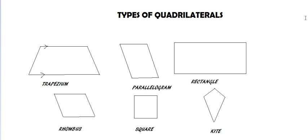By now you have a general idea of a quadrilateral. Let's talk about different types of quadrilaterals. First is the trapezium. A trapezium is a quadrilateral in which one pair of opposite sides are parallel. The 2 arrows drawn here indicate that these 2 sides are parallel. This is a trapezium.